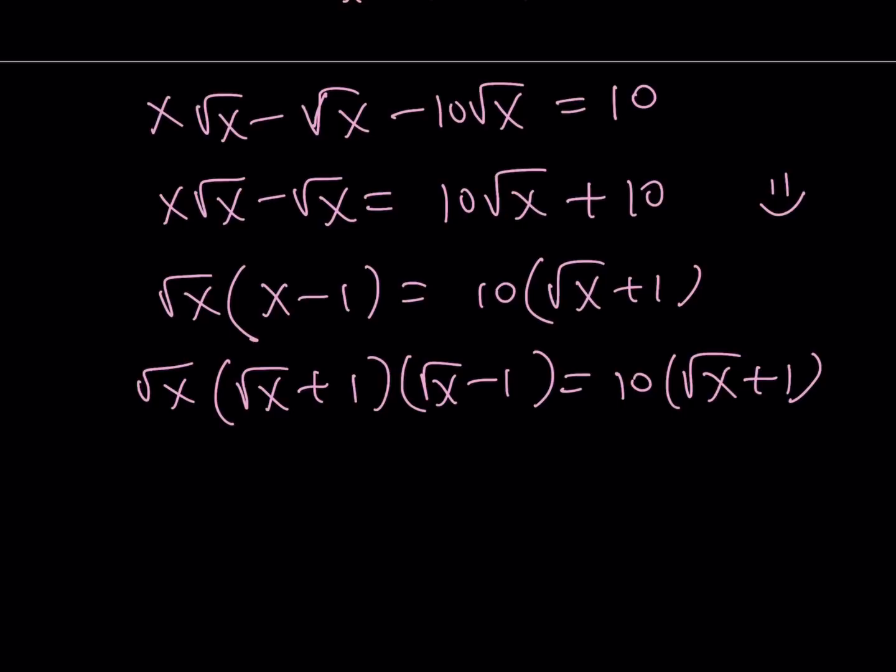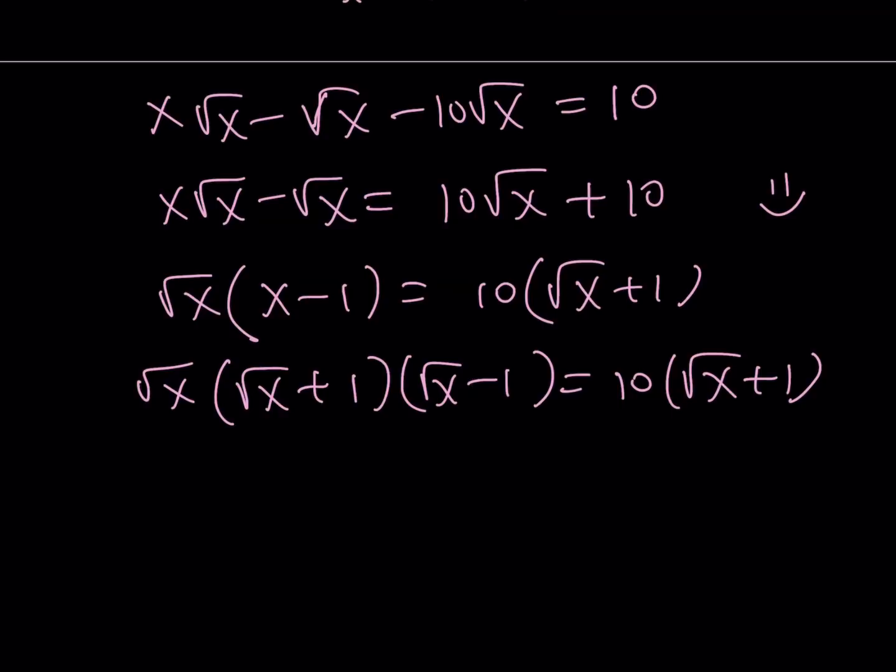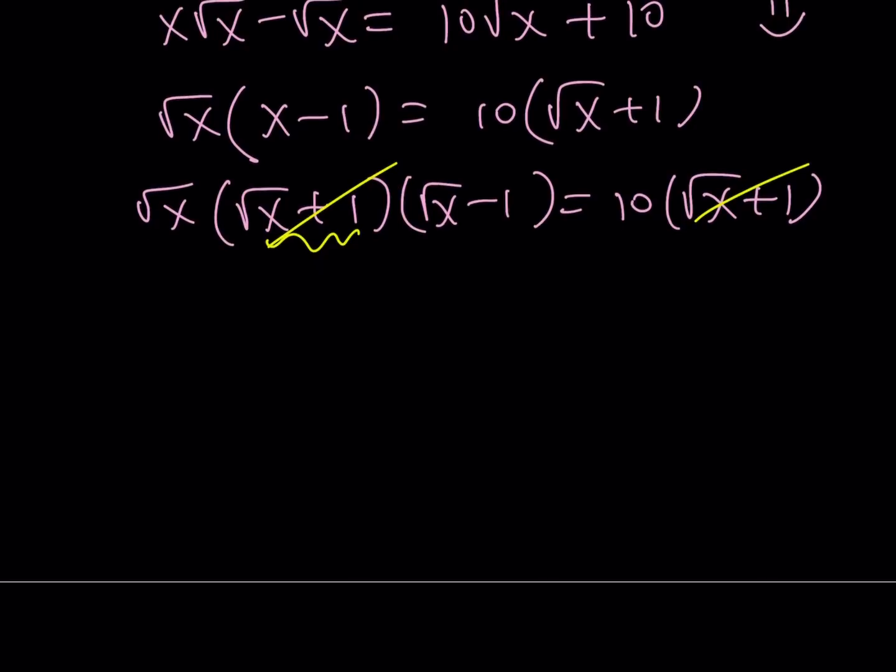Root x plus 1. If you're dealing with a real number, root x plus 1 is never going to be 0 because it's always positive. It's gone. Now I have root x times that. Let's go ahead and distribute. When you distribute, you're going to get the answer without knowing. And that's going to bring us to the end of this video.